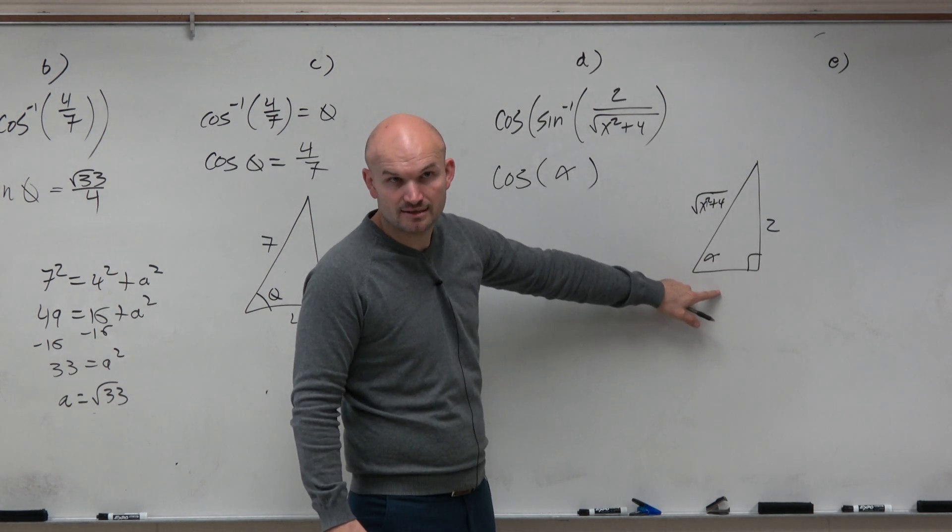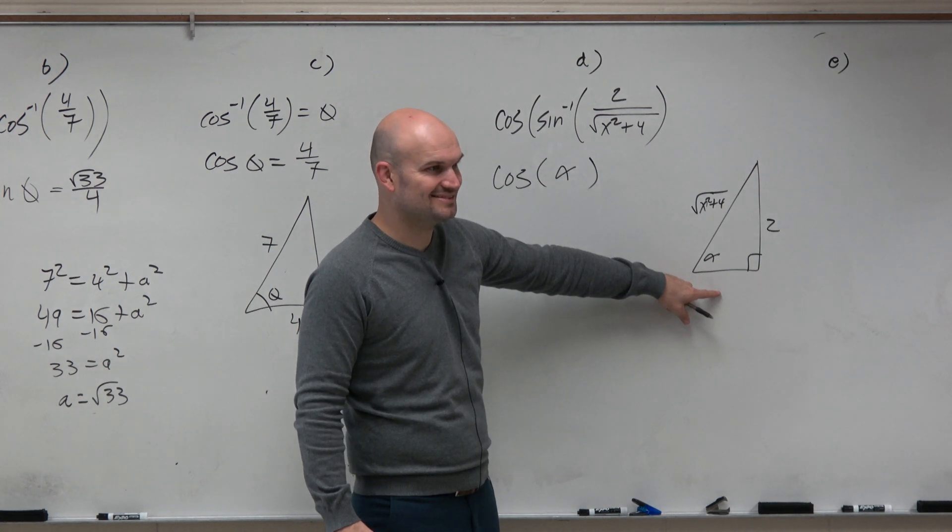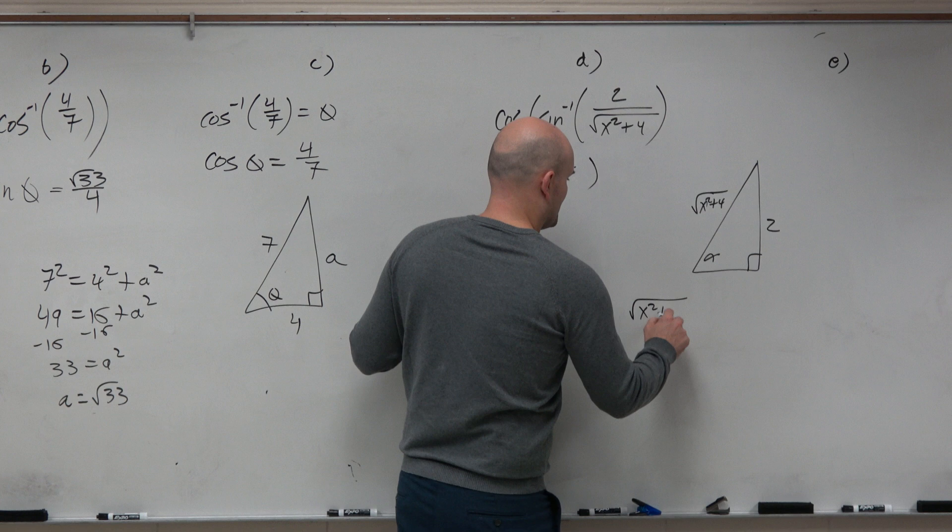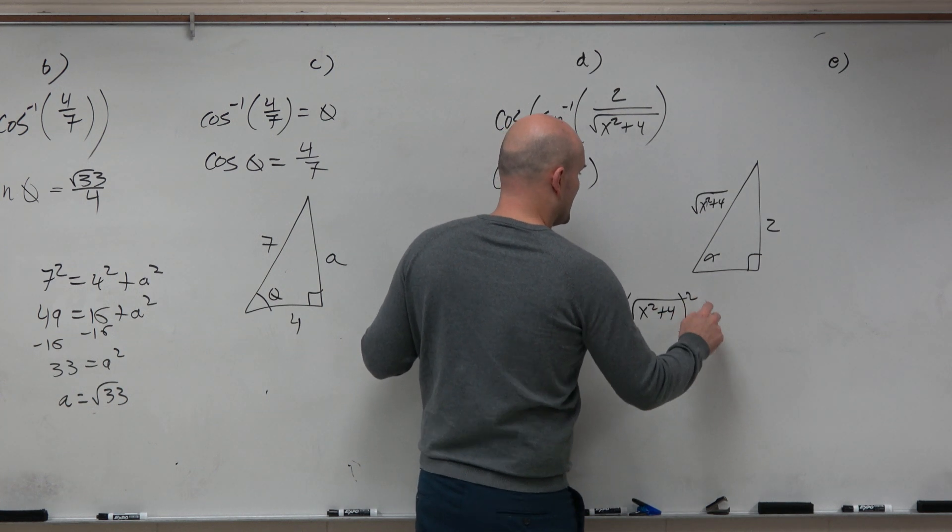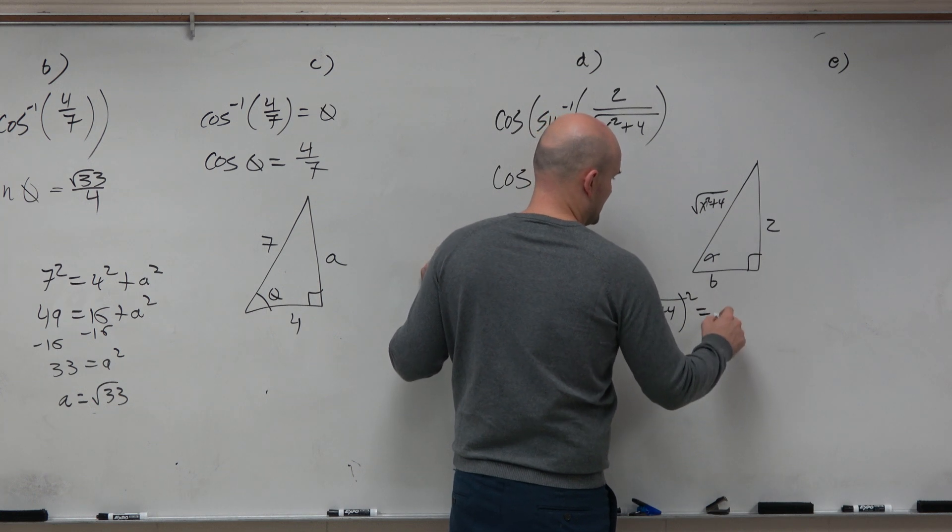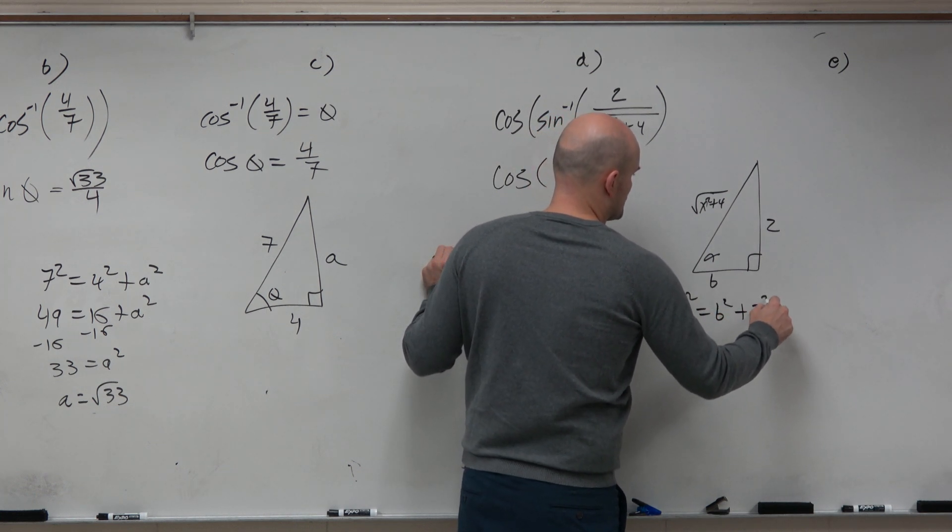Well, I don't have the adjacent side. But can I find the adjacent side? Of course I can. So I have x squared plus 4 quantity squared equals, let's call this b again, or let's call it b, b squared plus 2 squared.